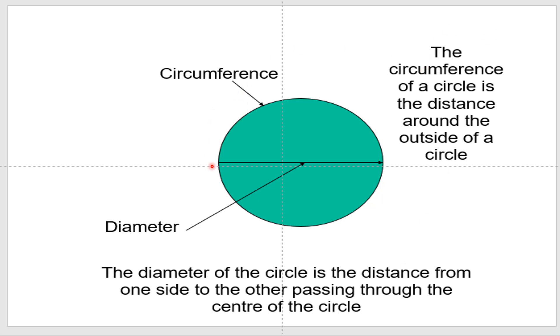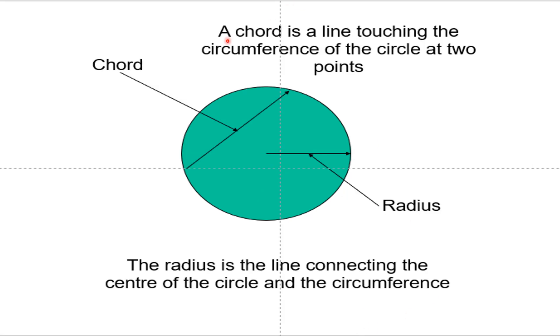We have here this whole part, we call it circumference. The circumference of a circle is the distance around the outside of a circle. We have here the diameter. The diameter of a circle is the distance from one side to another, passing through the center of the circle. A chord is a line touching the circumference of a circle at two points. So we have here a chord, and this is the radius. Radius is the line connecting the center of the circle and the circumference.